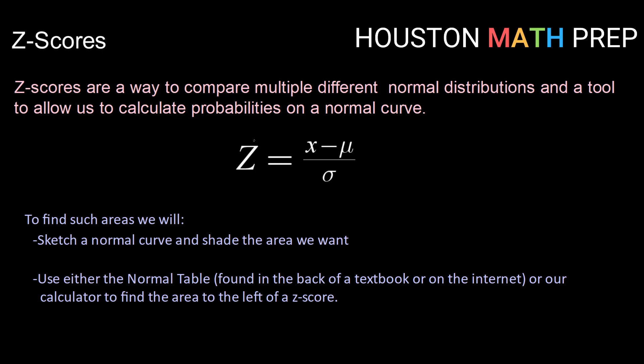Now our formula for a z-score is equal to the random variable value x minus μ, which is our mean of course, divided by σ, or our standard deviation.